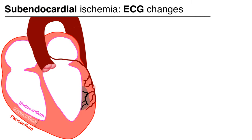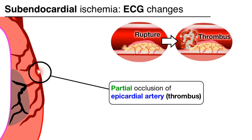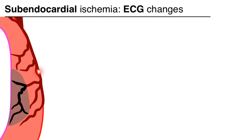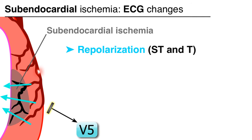As previously mentioned, unstable angina and NSTEMI are due to subendocardial ischemia caused by plaque rupture and thrombus formation and incomplete occlusion of a coronary artery. The subsequent subendocardial ischemia will only affect the repolarization period and may manifest on an EKG as ST segment and/or T wave changes.